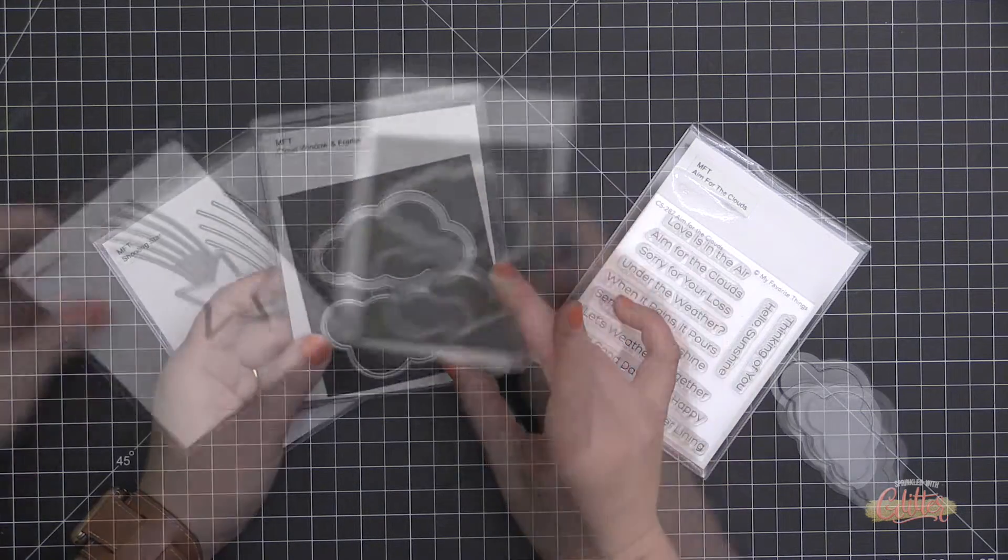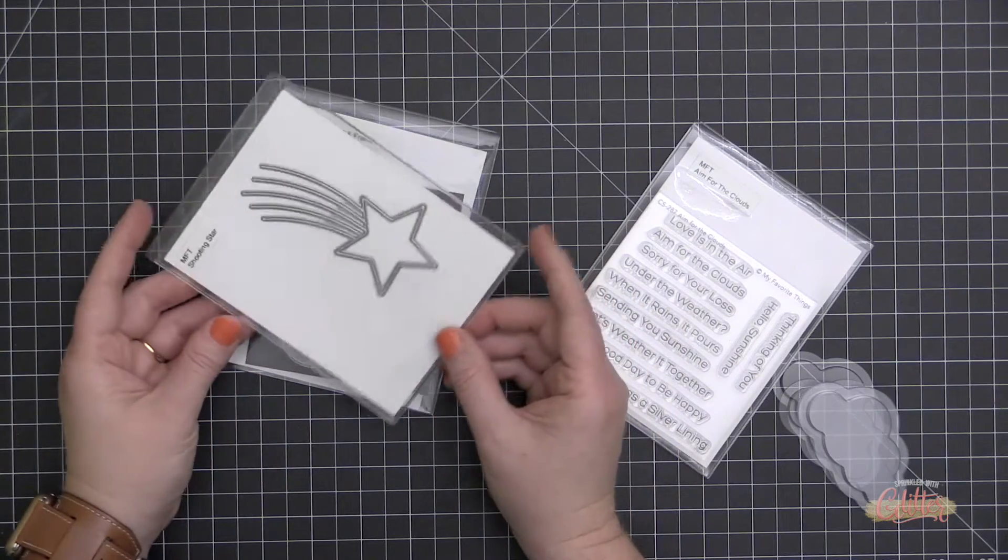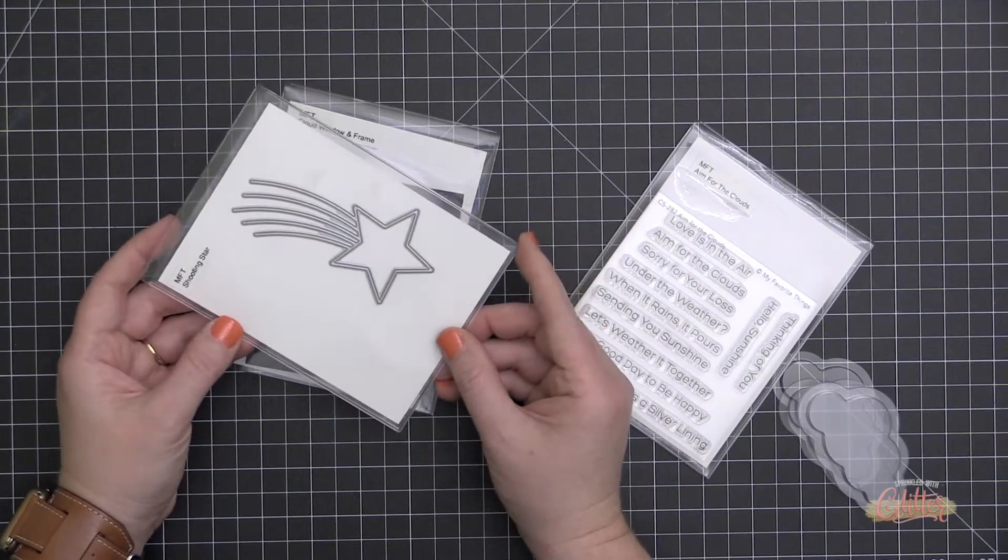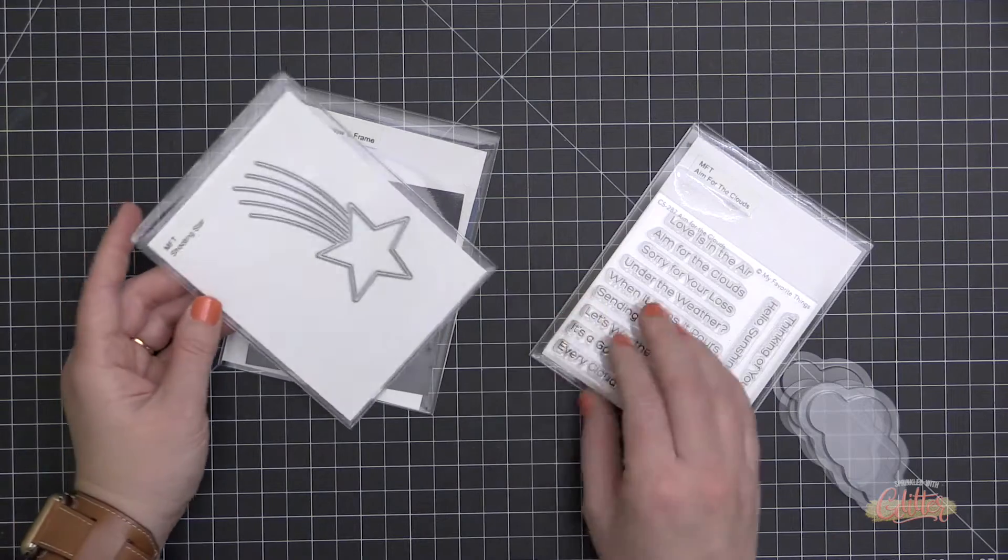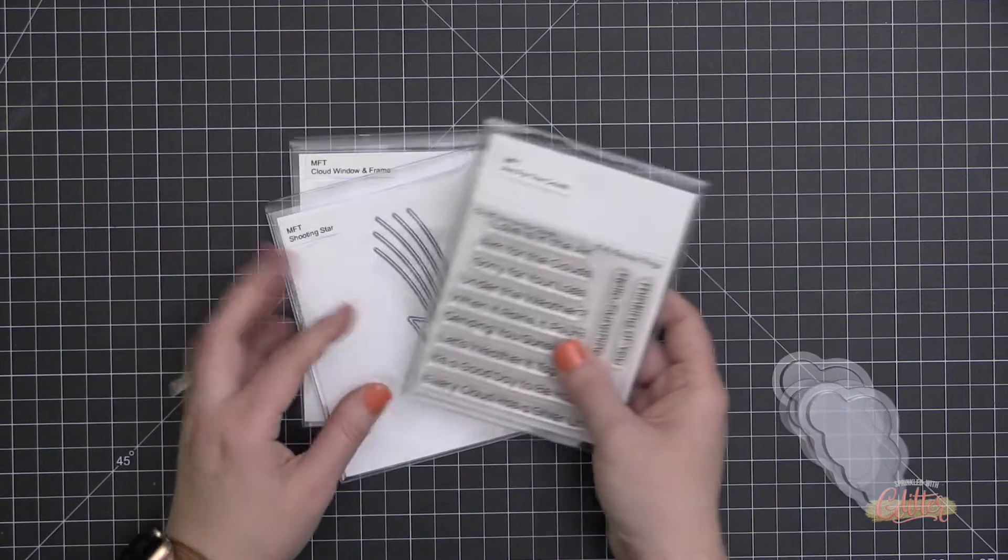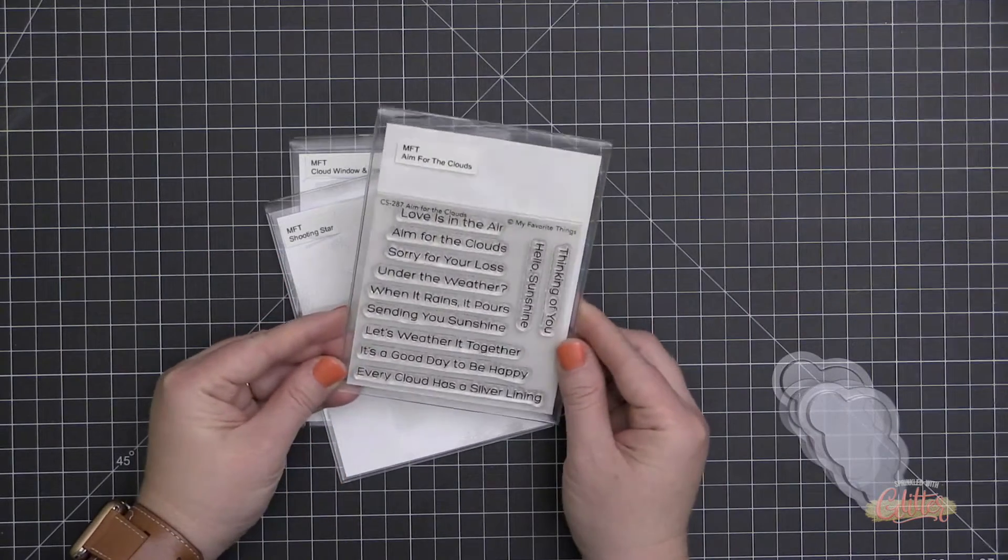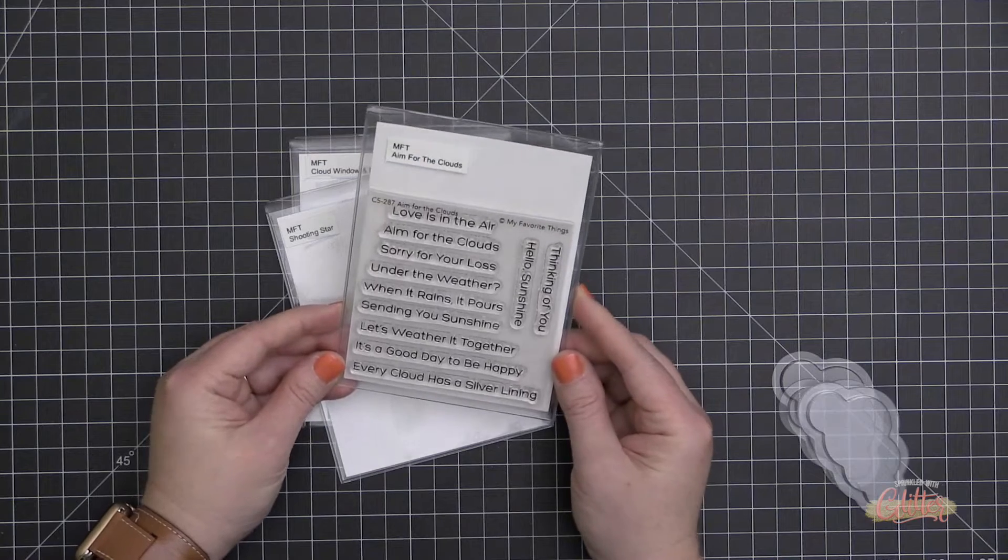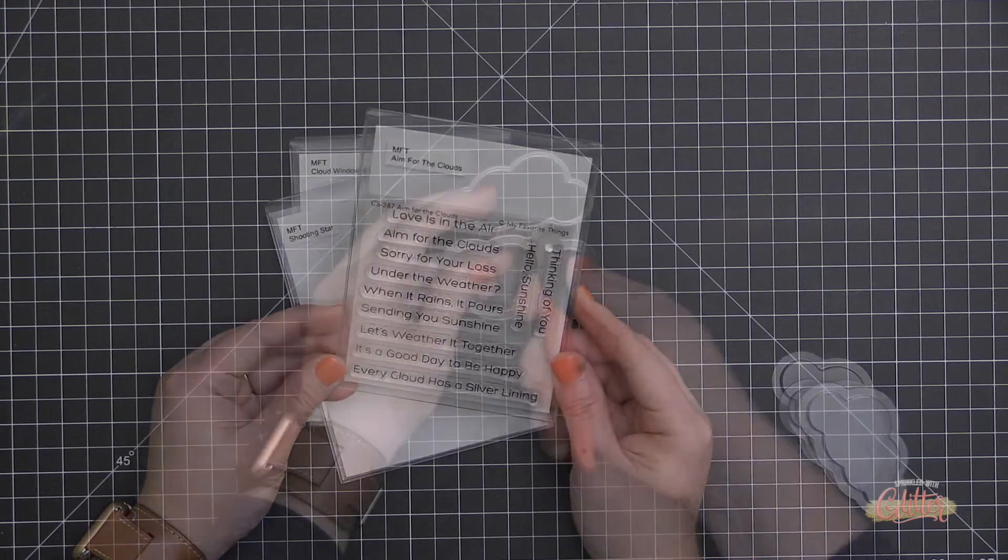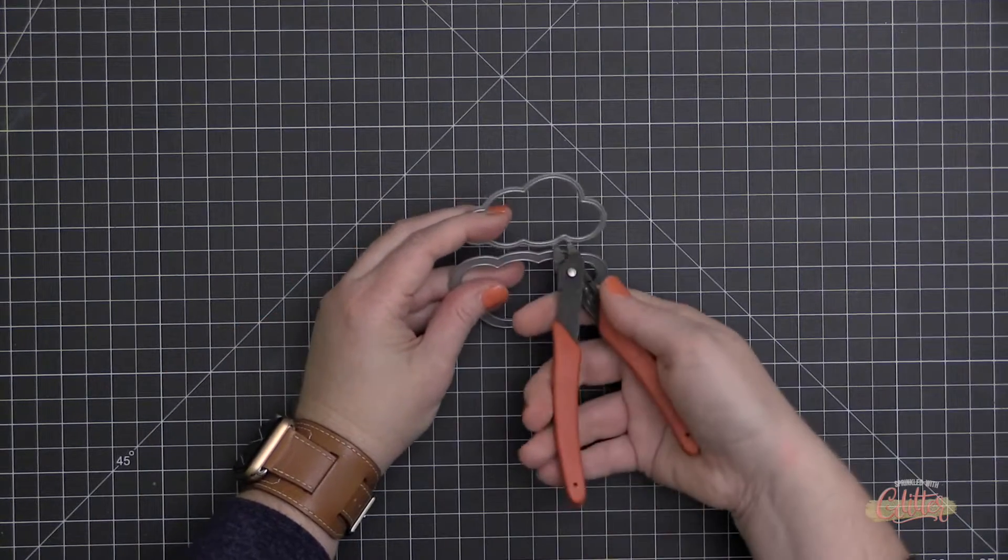My Favorite Things have several of these window and frame and coordinating pouch die sets, so you may want to check those out. They make it really super easy to create a shaker card. I'm also going to be using that shooting star die and the Aim for the Clouds sentiment set.